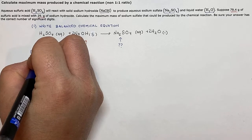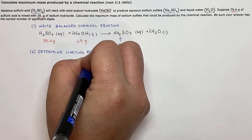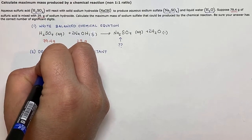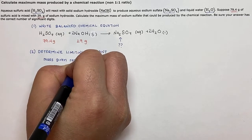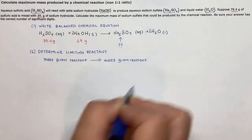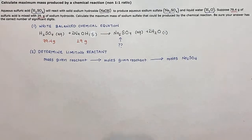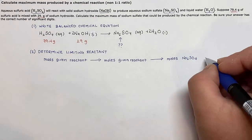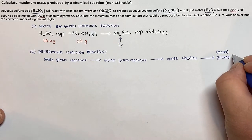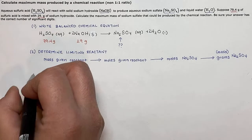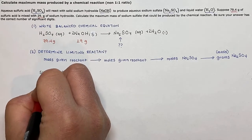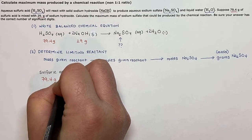We're going to determine the limiting reactant. The method we'll use is: start with the mass of a given reactant, convert that to moles of the given reactant, then convert to moles of the product. Because the question asks for maximum mass, we'll convert moles of sodium sulfate to grams. Let's start with the first value — 79.4 grams of sulfuric acid, H₂SO₄.